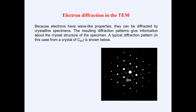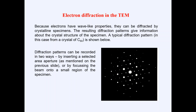A typical diffraction pattern — in this particular case you can see it here — it is Carbon 60, shown here. This is a diffraction pattern obtained using a transmission electron microscope. The diffraction pattern belongs to Carbon 60, and you can easily visualize how a TEM diffraction pattern looks.